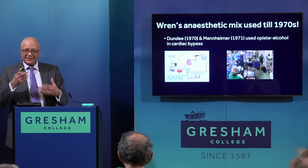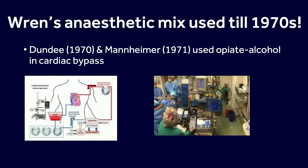Remarkably, as intravenous anaesthetics were refined, Wren's anaesthetic mix — opiate and alcohol — was used until the 1970s, somewhat rediscovered by distinguished anaesthetists for cardiac bypass. In cardiac bypass, the heart and lungs are bypassed, so the lungs can't absorb inhaled anaesthetic. It has to be intravenous. But drugs like thiopentone accumulate too much — the patient might take days or weeks to wake up. Opiate and alcohol is just the right mix to achieve the balance, allow appropriate wake-up time, and it doesn't accumulate. That is a picture of how you bypass the heart and the lungs, and a modern-day bypass machine on the right.